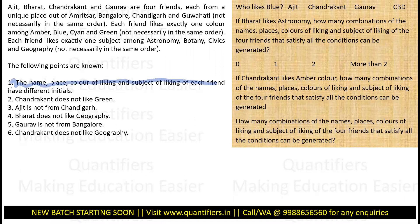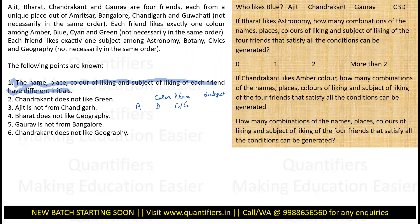The following points are known: the name, place, color, and subject of each friend have different initials. So basically, if there is a person named A, he cannot like a color starting with A. If he is liking color Blue, then he cannot be from Bangalore. He must be from Chandigarh or Guwahati, and if C is taken by Chandigarh then this must be Guwahati — simple as that.